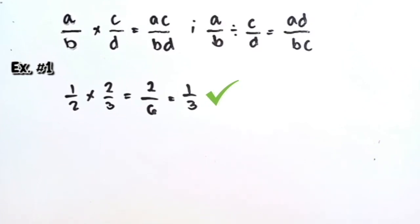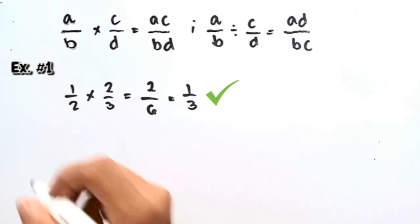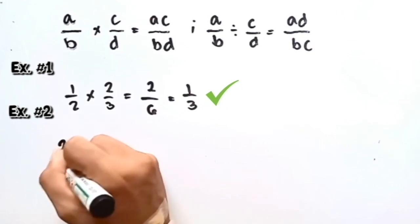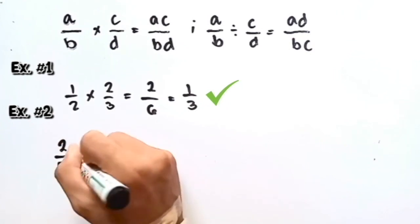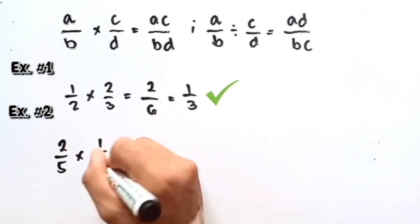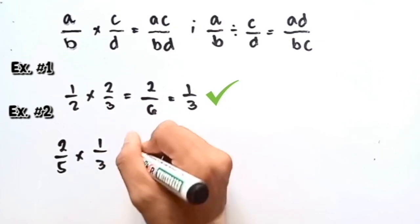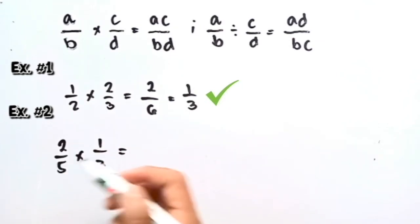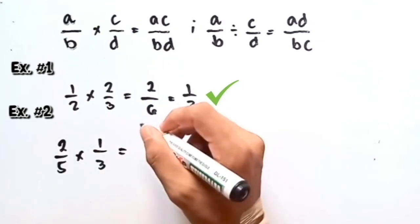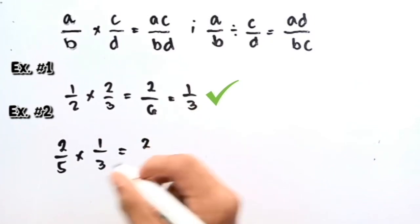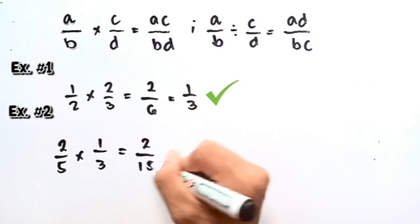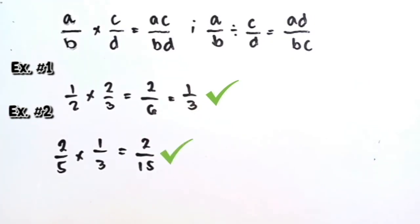Let's proceed to the second example: 2 fifths times 1 third. So this is equal to 1 times 2 is 2, then 5 times 3 is 15. So 2 over 15 is the answer.